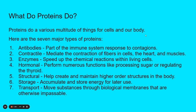There are enzymes, which speed up chemical reactions within living cells, either by bringing two things together that need to be combined, or making it easier to split something apart. They speed up a reaction that would take so much longer without them. Hormonal enzymes perform numerous functions like processing sugar or regulating the thyroid. Structural proteins help create and maintain higher order structures in the body. Storage proteins accumulate and store energy for later use. And transport proteins move substances through biological membranes that otherwise would be impassable — for instance, moving sugar through our cells from our blood.